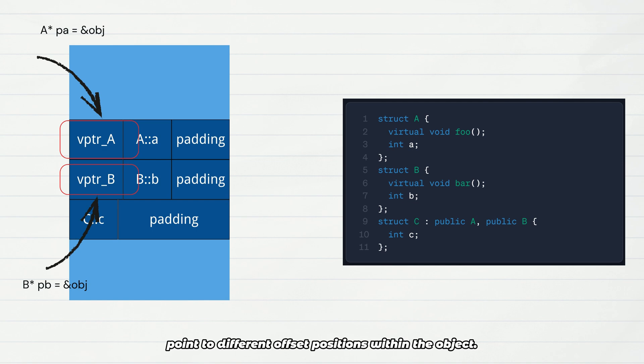pA points to the object's starting address, the location of A's virtual table pointer. pB points to the location of B's virtual table pointer at an offset of 16 bytes. This is why multiple inheritance requires this-pointer adjustment. When you call B's bar function via pB, the compiler automatically subtracts the offset from pB's address to correctly access the B sub-object. This adjustment happens silently behind the scenes, but it's an inevitable requirement imposed by the memory layout.